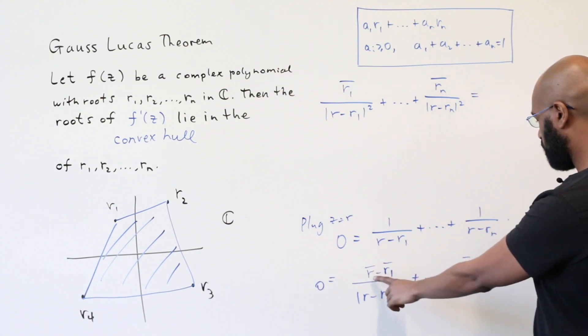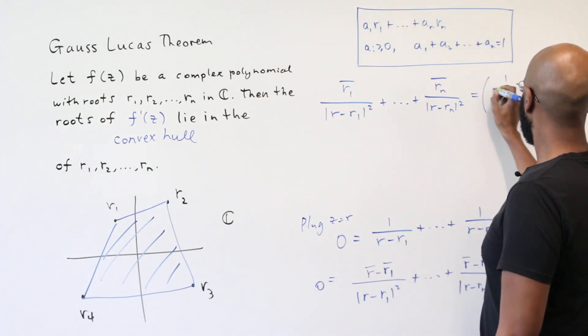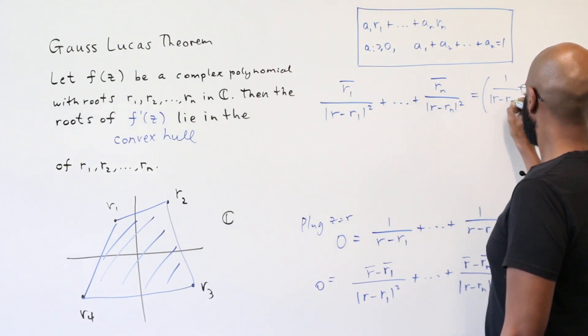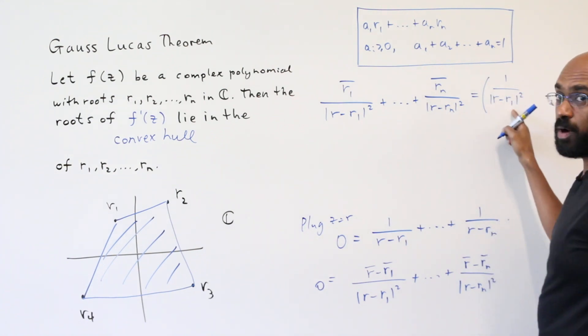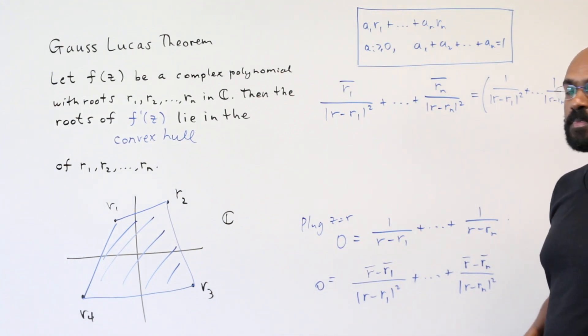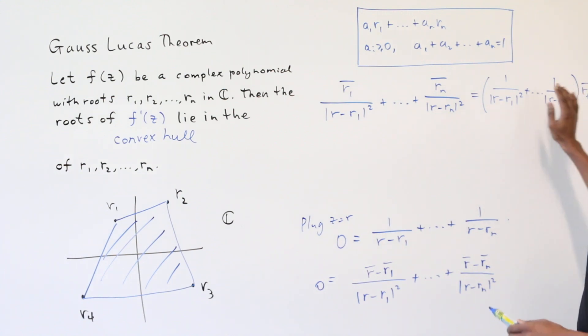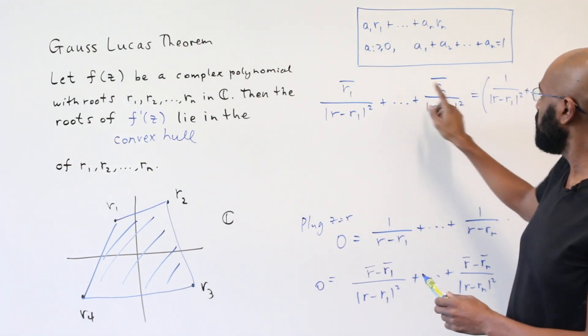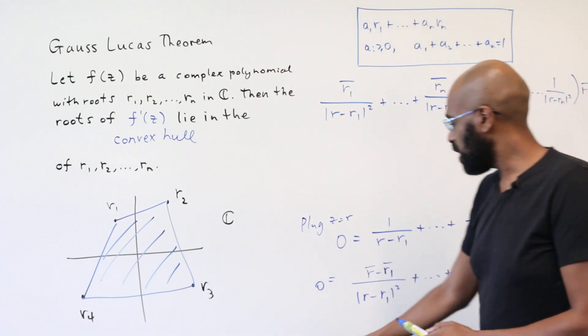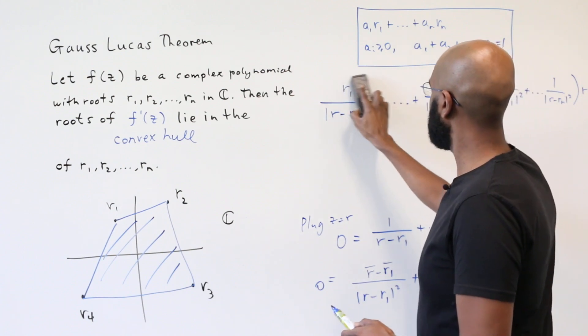And then we'll have the conjugate of r times a bunch of things. 1 over the modulus of r minus r1 squared up to 1 over the modulus of r minus rn squared times r conjugate. Now you can start to see where this is going. We kind of have r here, but this is conjugate, and then we have scalar multiples of each of these ri's. We have conjugates everywhere, so let's take all the conjugates off by conjugating each side.